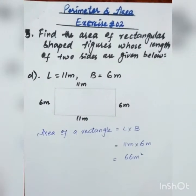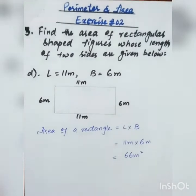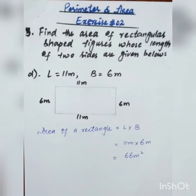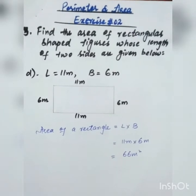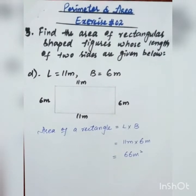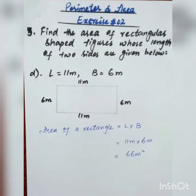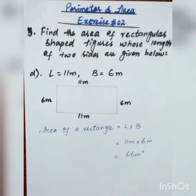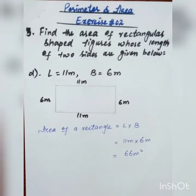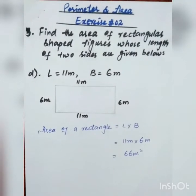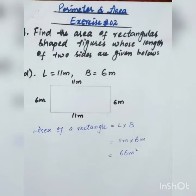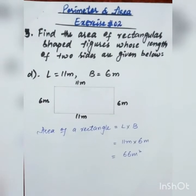Number 3: Find the area of rectangular shape figures whose length of two sides are given. We have to find the area of a rectangle. It has 4 sides, but the opposite sides are equal in length. L is equal to 11 meters and B is equal to 6 meters. Area of a rectangle is equal to L into B: 11 meters into 6 meters. When we multiply 11 with 6 we get 66 meter square, because the unit of area is in square.